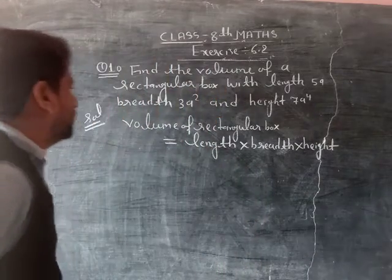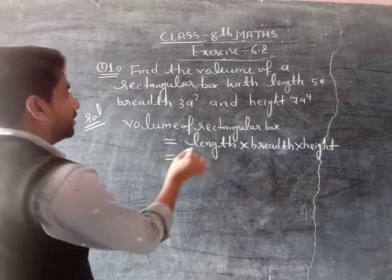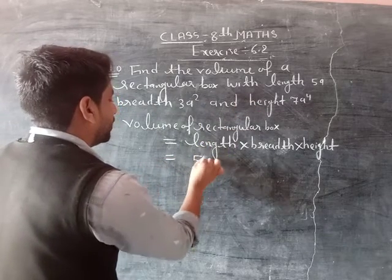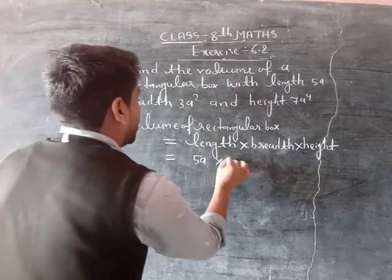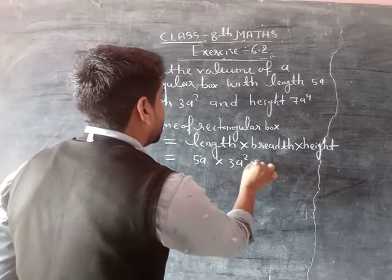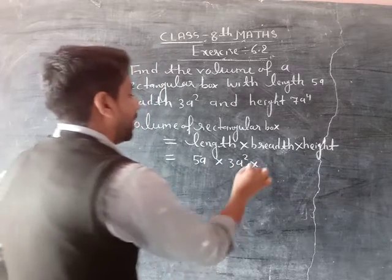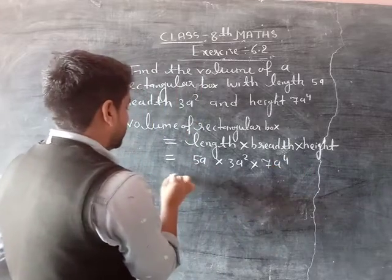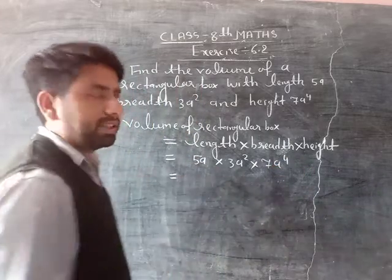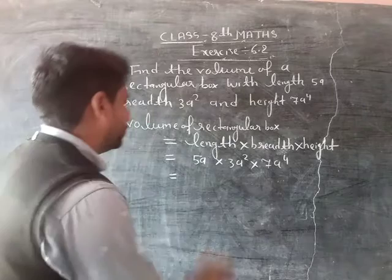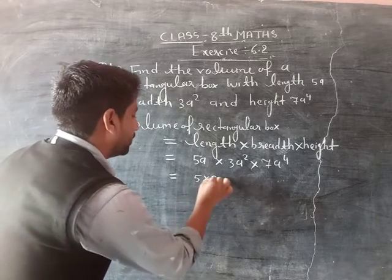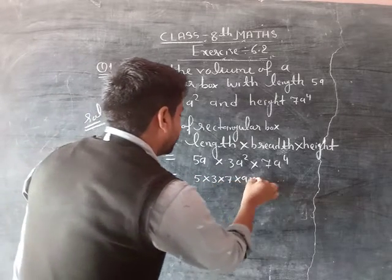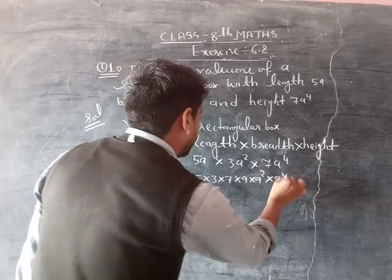If we have the value of length as 5, the value of breadth as 3a squared, and the height as 7a to the power of 4, let's solve this. Let's find the product: 5 × 3 × 7, and a × a squared × a to the power of 4.